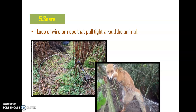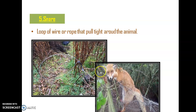Then comes the snare, which is also a type of trap. Here you can see a loop of wire or rope — this is a kind of snare. It is a loop of wire or rope that is pulled around the animal when it passes through. Here this is a metallic loop of wire, and whenever a fox is passing through this snare, it will be trapped. This is another method of trapping or collecting a mammal.